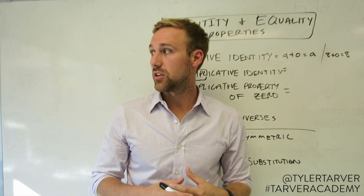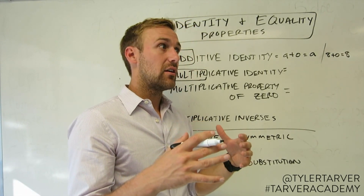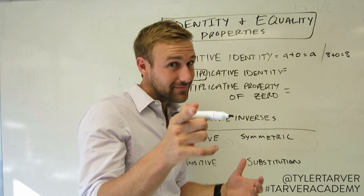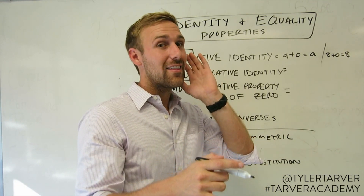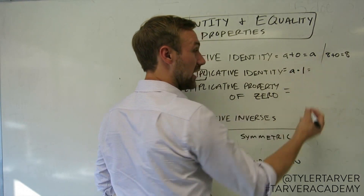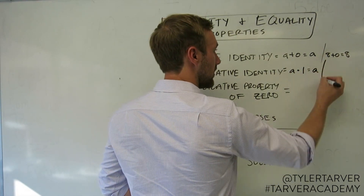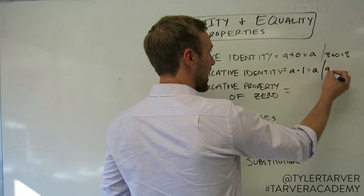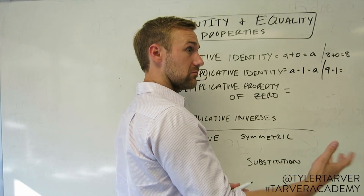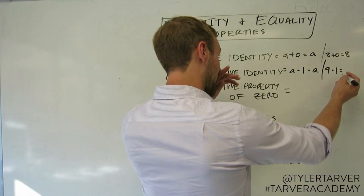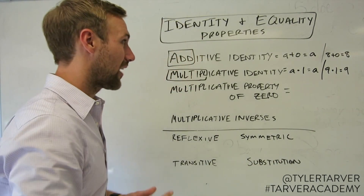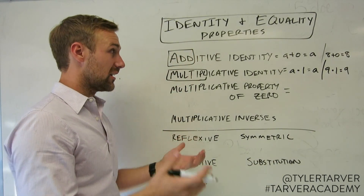What can you do with multiplication to where you have something, it's multiplied by something, but then it equals itself? That's right — times one. So essentially, a times one is going to equal a. So for instance, nine times one — well, you're multiplying nine times one, which is the amount it already has, that's nine. Great job! That's the multiplicative identity property.